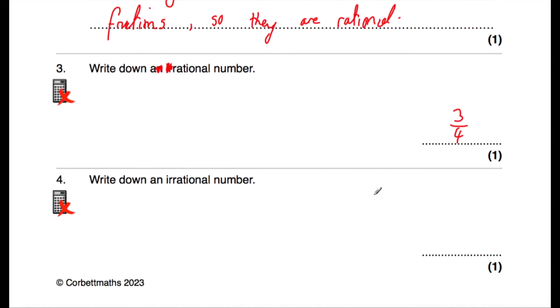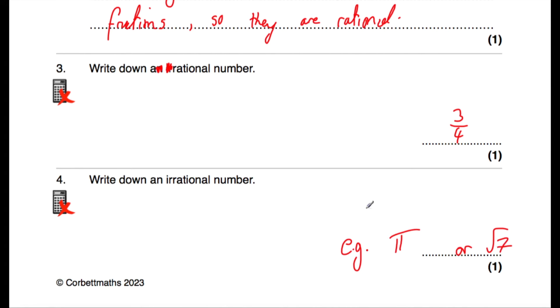Question number four says: write down an irrational number. I'm going to give pi as an example. Pi is irrational — it can't be expressed as a fraction. Or perhaps the square root of seven and so on. Those are examples of irrational numbers.